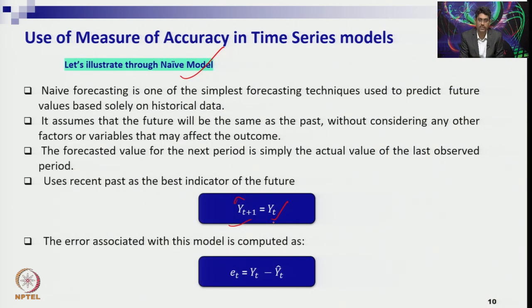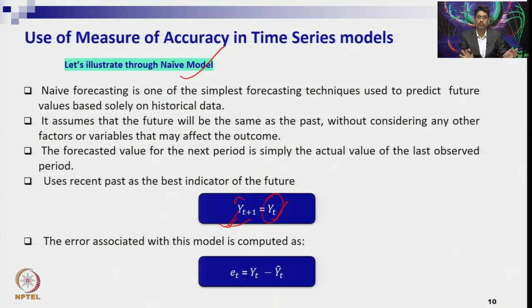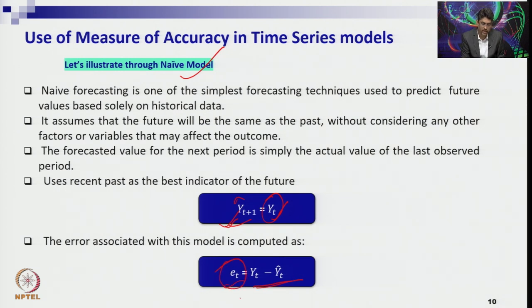For example, today's closing price of gold, crude oil, or a stock — that price is considered the forecast for tomorrow. The difference between actual and forecast values is your error. These errors are considered through the Naïve model to understand the four methods of measuring accuracy.